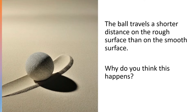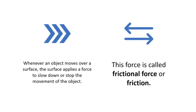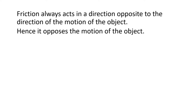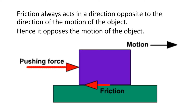Why do you think this happens? Whenever an object moves over a surface, the surface applies a force to slow down or stop the movement of the object. This force is called frictional force or friction. Friction always acts in a direction opposite to the direction of the motion of the object, hence it opposes the motion of the object.